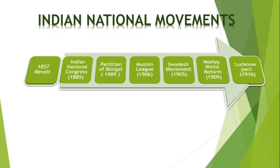After that, the Morley-Minto Reform, 1909, was introduced during the period when Lord Minto was the Governor General of India. The reform introduced a separate electorate for Muslims besides other constitutional measures. The government tried to create a rift within Congress and also gain the favour of Muslims against Hindus.